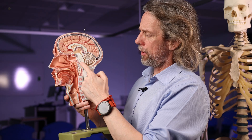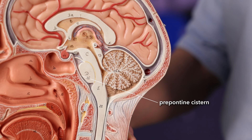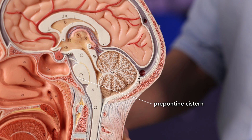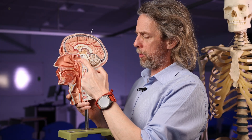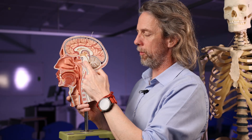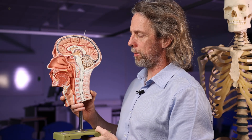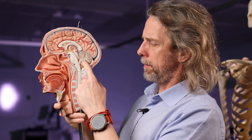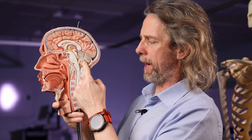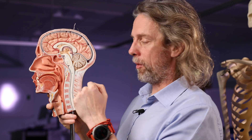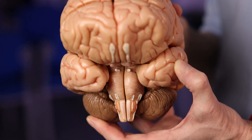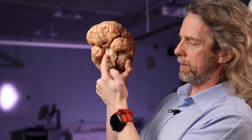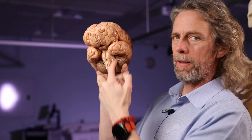Here's the pons. Around here we can see some spaces — this is the pontine cistern, sometimes called the pre-pontine cistern, because if you're moving in this direction you get to it before the pons. In the pre-pontine cistern we've got the basilar artery running up, sending branches out to the pons. There's a space around the pons and around the medulla that's not too surprising.